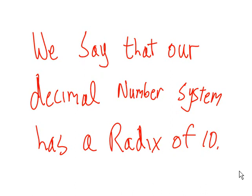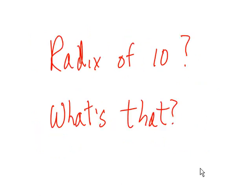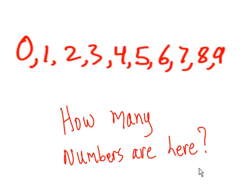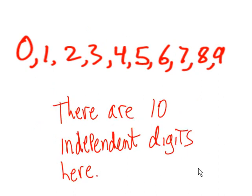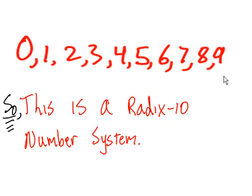We say that our decimal number system has a radix of 10. What's that? How many numbers are here? There are 10 independent digits here: 1, 2, 3, 4, 5, 6, 7, 8, 9, 10. So this is a radix 10 number system.